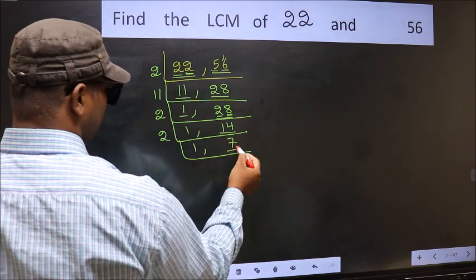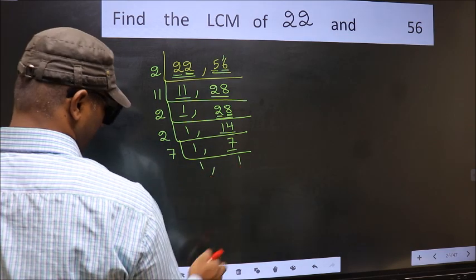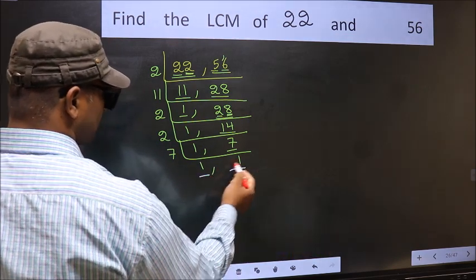Now we have 7. 7 is a prime number, so 7 times 1 is 7. So we got 1 in both the places.